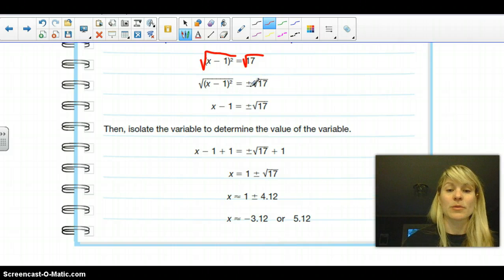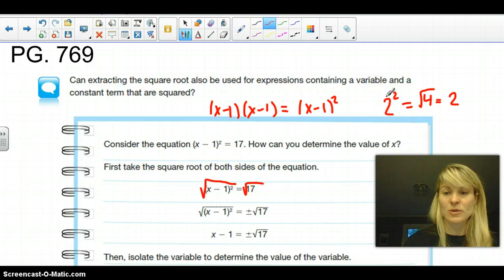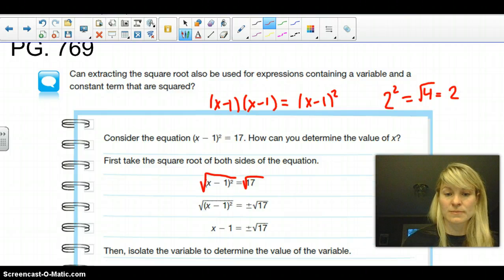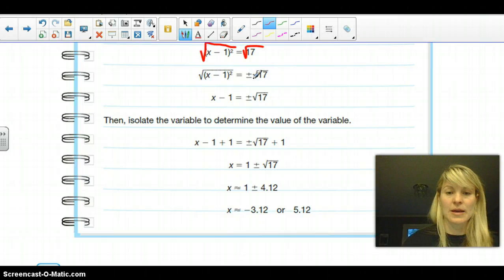And then remember, we have that plus or minus, because a negative times a negative is a positive. So this answer can be plus or minus the square root of 17. So the square root of (x - 1) squared is just x - 1, just like the square root of 4 was 2. And then this is not a perfect square, so we're going to leave it like this.